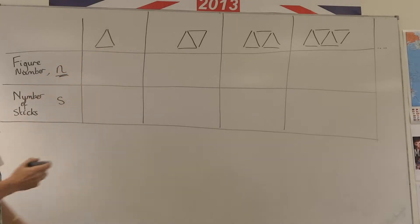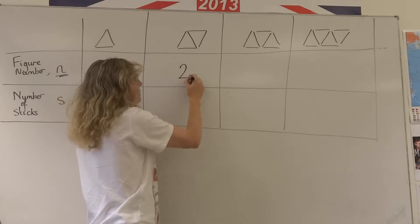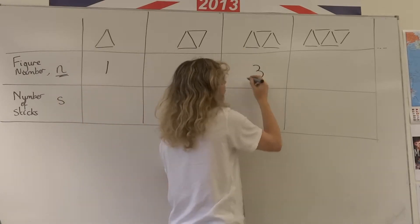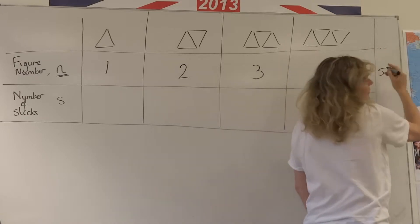So what figure number is this? Figure number one. Picture number one. What picture number is this? Two. Picture number here, three. Picture number here, four. And we could carry on. Five, six, seven, eight, nine, ten.